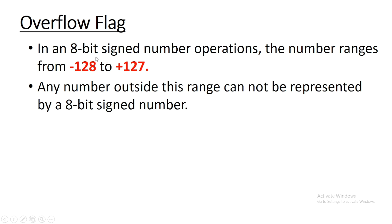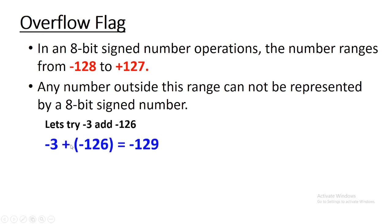For an 8-bit signed number, the range is from minus 128 to positive 127. If after an arithmetic calculation any number falls outside this range, the overflow flag should be set, because we cannot represent that number using 8 bits as a signed number. For example, let's add minus 3 and minus 126 — we know the result is minus 129, which falls outside this range. So let's see what happens and how the overflow flag is generated.